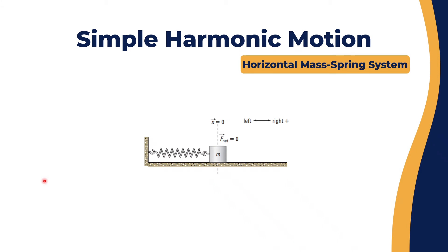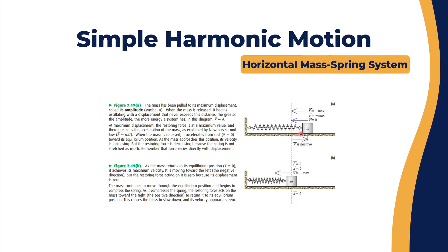Simple harmonic motion — we will start with a horizontal mass-spring system. The mass-spring system could be horizontal or vertical; we will start with the horizontal and explain all the ins and outs of harmonic motion, then move to the vertical system. You have a mass m and a spring resting at the natural position, or equilibrium. The x initial starts at zero, net force is zero, everything is at rest. Right is positive, left is negative. The mass is pulled to its maximum displacement, which can be called the amplitude.